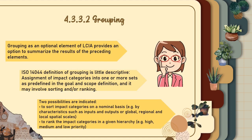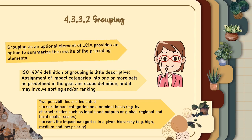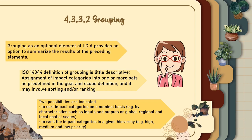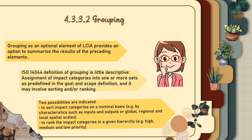Next, grouping. Grouping as an optional element of LCIA provides an option to summarize the results of the preceding elements. ISO 14,044 defines grouping as the assignment of impact categories into one or more sets, predefined in the goal and scope definition, which may involve sorting and/or ranking. Two possibilities are indicated: first, to sort impact categories on a nominal basis — for example, by characteristics such as inputs and outputs, or global, regional, and local spatial scales. Second, to rank the impact categories in a given hierarchy — for example, high, medium, and low priority.